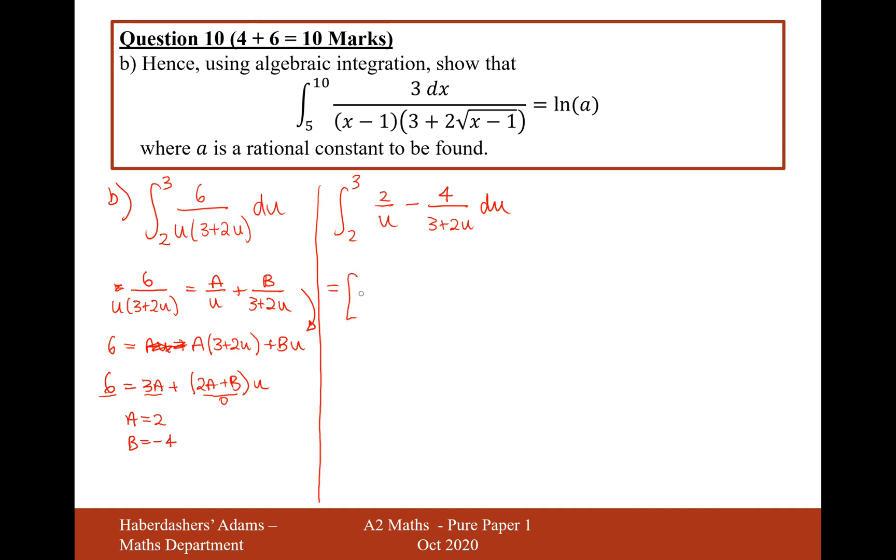Let's now do the integration. So it's going to be 2 ln u for the first one, and then it's going to be minus. Now on this one here, what we're doing is using the ln rule. Now the ln rule says if you differentiate the bottom and you get the top, then you can use the ln rule, which is ln of the denominator. But the differential of the bottom is actually 2. So if I factorise out a 2 to the front, so it would be 2 ln(3 plus 2u), then that will work.